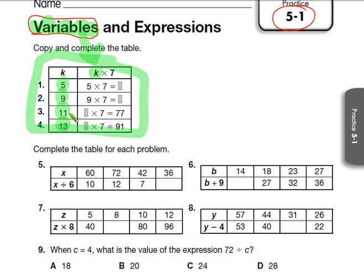So in number one, they're telling us that k has to equal 5. So what they did is they took this 5, they replaced it here instead of k, and instead of saying k times 7, it now says 5 times 7, and we all know that's 35.